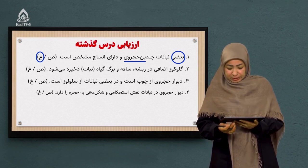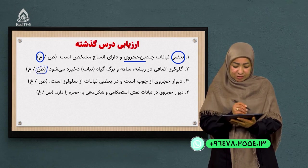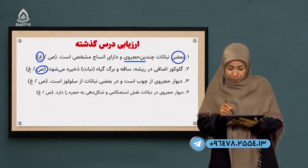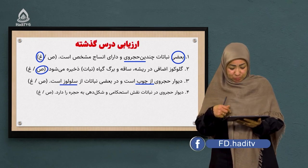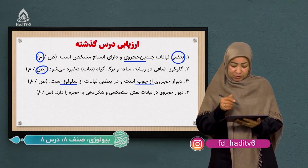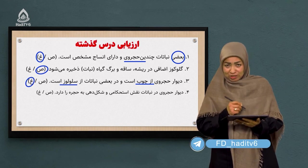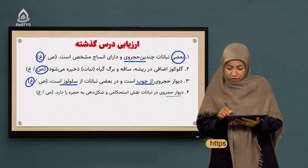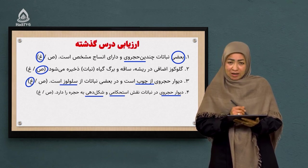سوال دوم: گلوکوز اضافی در ریشه، ساقه و برگ گیاه ذخیره می‌شود. این جمله کاملاً صحیح است. سوال سوم: دیوار حجروی از چوب است و در بعضی نباتات از سلولوز. این جمله غلط است چون جای کلمه چوب و سلولوز عوض شده؛ دیوار حجروی از سلولوز است و در بعضی نباتات چوبی می‌شود. سوال چهارم: دیوار حجروی در نباتات نقش استحکامی و شکل‌دهی به حجره را دارد. این جمله کاملاً صحیح است.